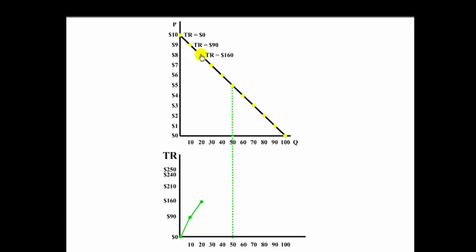So as I keep lowering the price, notice that the total revenue keeps going up. 7 times 30 is $210. 6 times 40 is $240. 5 times 50 is $250.